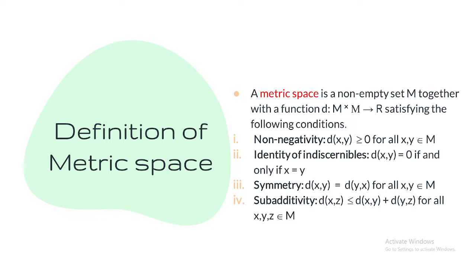What is metric? I have taken a set M and a function D, which is a mapping from M cross M to R, because distance is a number and we take non-negative real numbers. This function D satisfies four conditions: the first is non-negativity, the second is identity of indiscernibles, the third is symmetry, and the fourth is the triangle inequality. Symmetry means the distance between X and Y equals the distance between Y and X — for example, the distance from Sivadasi to Madurai is the same as from Madurai to Sivadasi, 80 kilometers.